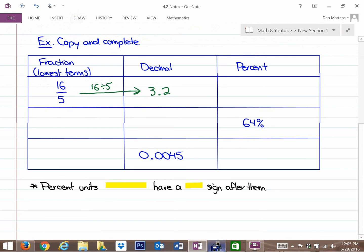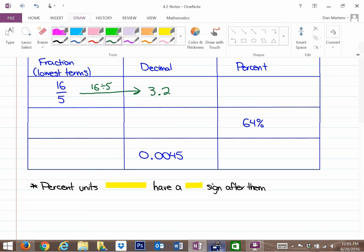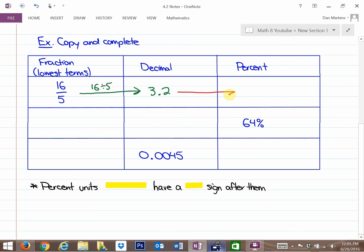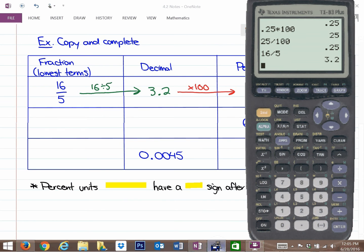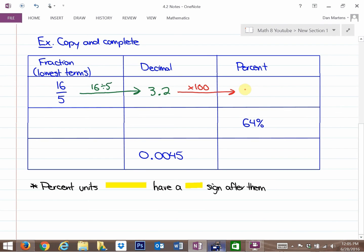So 16 divided by 5 is equivalent to 3.2. And we did look at how to make that into a percent, and the way to make that into a percent is to times by 100. So because it's more than 100% and it's more than one whole, it shouldn't shock you if I times 3.2 times 100 that I get more than 100%. It's 320%.